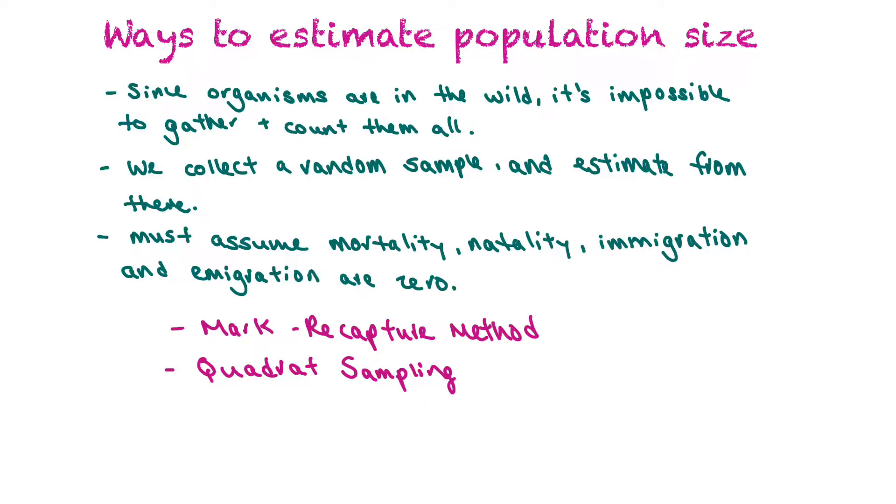So you have to assume in these calculations that mortality, natality, immigration, and emigration are zero. And the two different methods we're going to take a look at are the mark-recapture method and quadrat sampling. There are other methods like transect sampling that can be used as well.